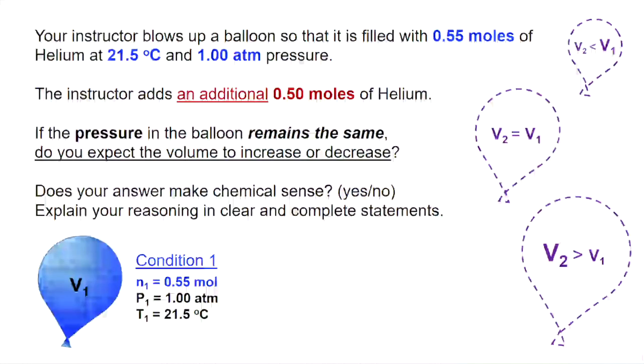Here I've summarized all the information that the question gave us. Our initial amount of moles of helium is N1, our pressure P1, and our temperature T1. Can you figure out which variables are changing and which are constant? Give it a try.